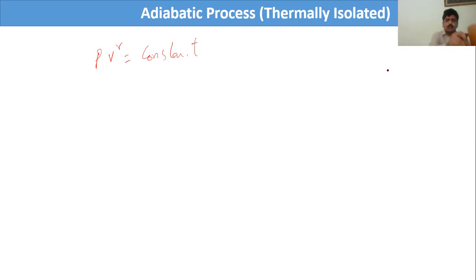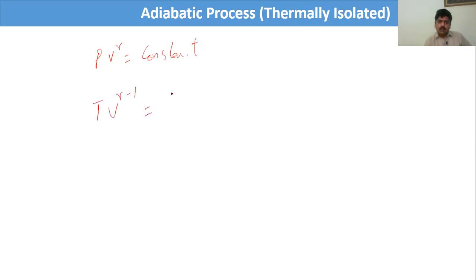For the adiabatic process, PV^γ = constant. We have previously derived the work done during the adiabatic process. Now let's prove that PV^γ = constant and TV^(γ-1) = constant, and find the work done during the adiabatic process.